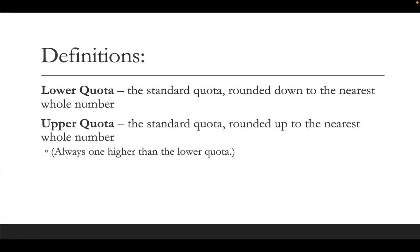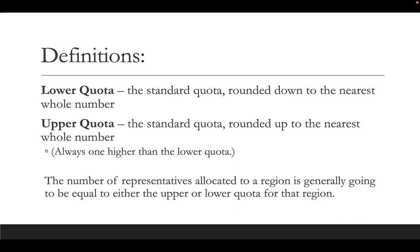For the upper quota, everything is rounded up. This should make sense that the upper quota is always one higher than the lower quota, right? They're just one apart. So generally, the standard quota is a decimal, and the lower part is the lower quota; when you round up, you get the upper quota. The number of representatives allocated to a region or state is generally going to be equal to either the upper or lower quota for that particular region or state — one or the other.